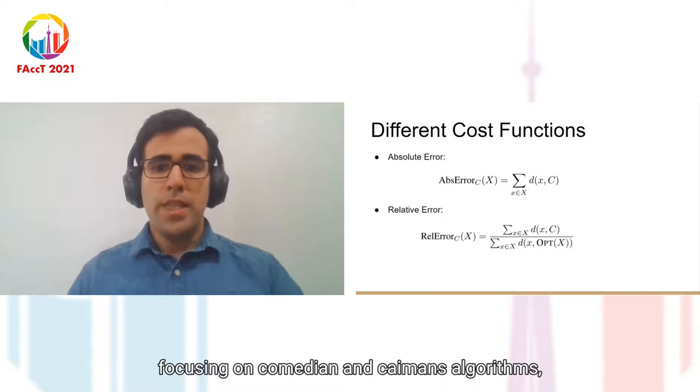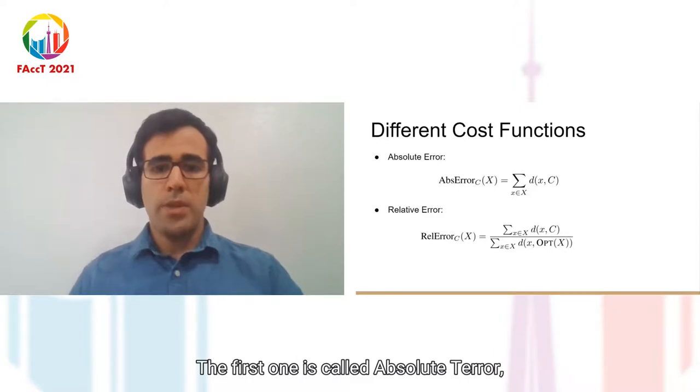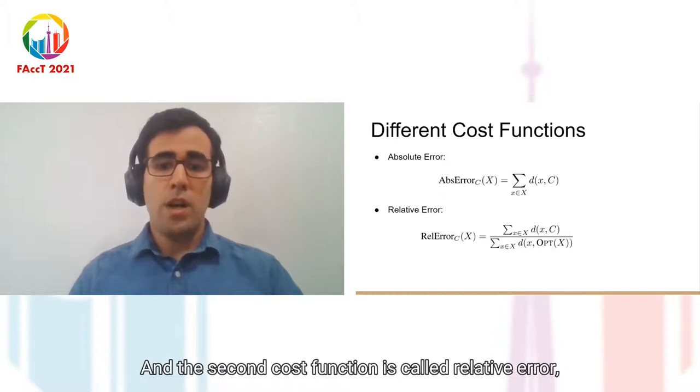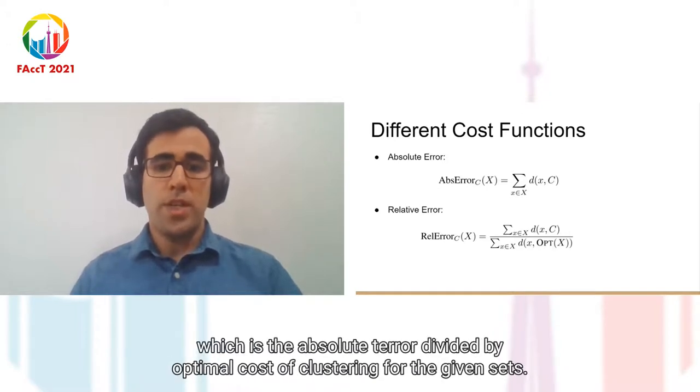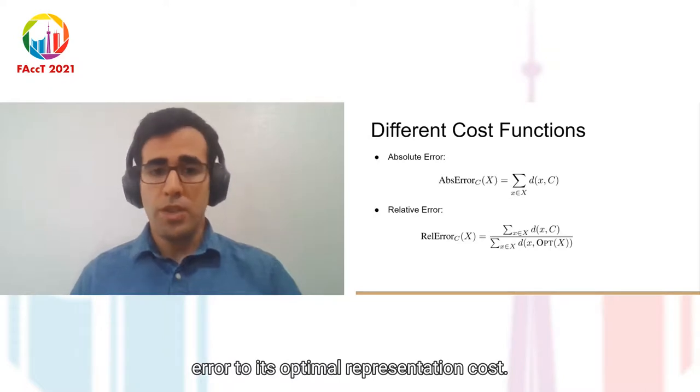Focusing on k-median and k-means algorithms, we proposed two cost functions for the fair clustering formulation. The first one is called absolute error, which is the sum of distances between data points and centers, and the second cost function is called relative error, which is the absolute error divided by optimal cost of clustering for the given set. In other words, a fair clustering with relative error cost function compares each group's absolute error to its optimal representation cost.